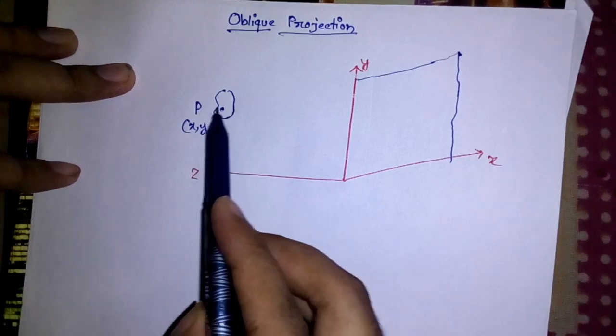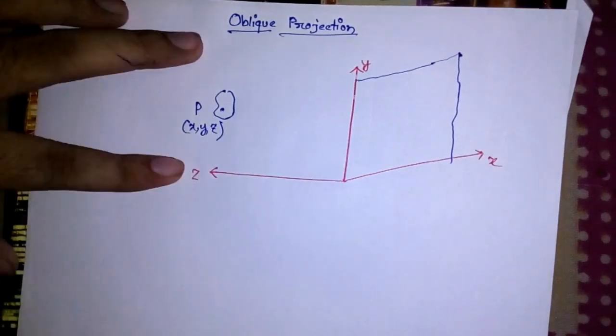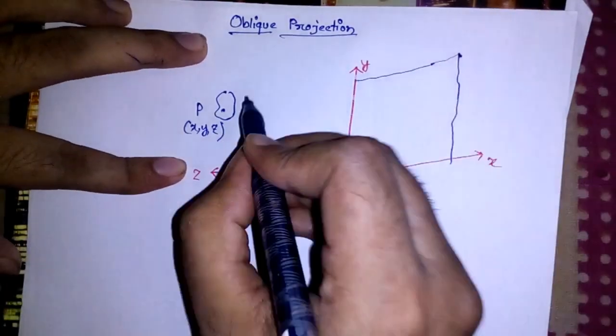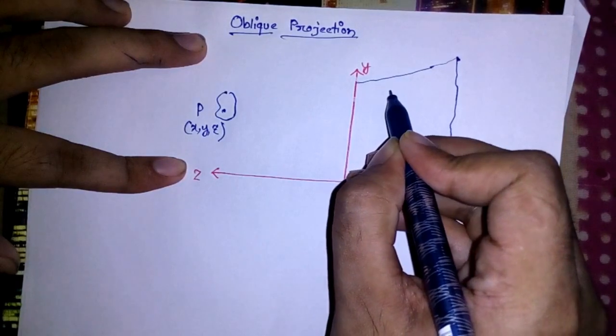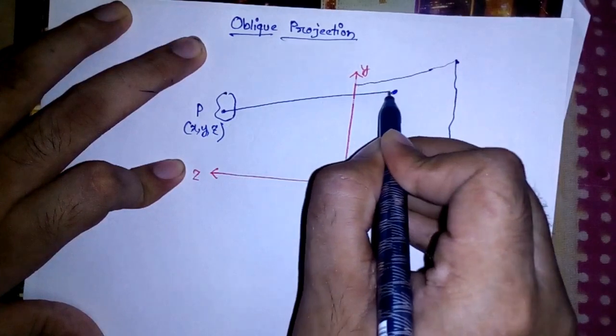This is any point of that object P which can be represented as X, Y, Z. Now what happens if I do an oblique projection? Let's say that after doing the oblique projection this point will be somewhat here, so let me draw this line right here.